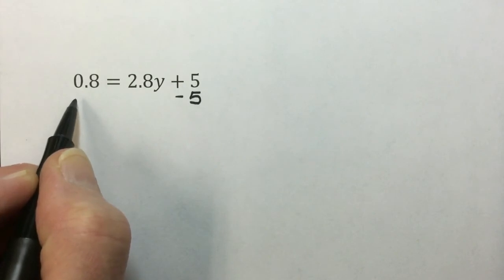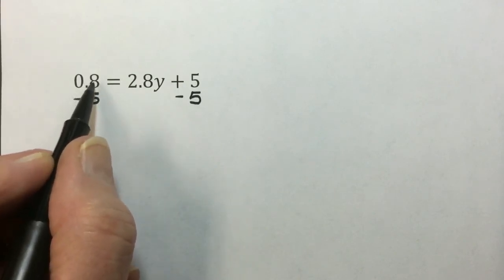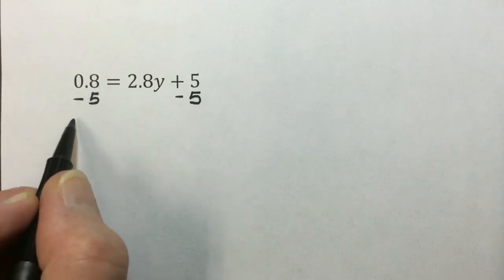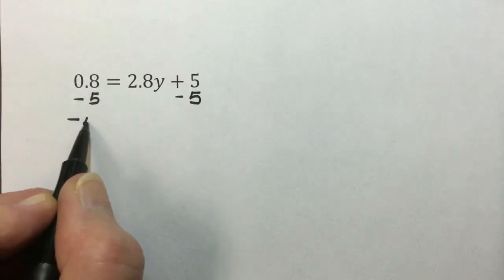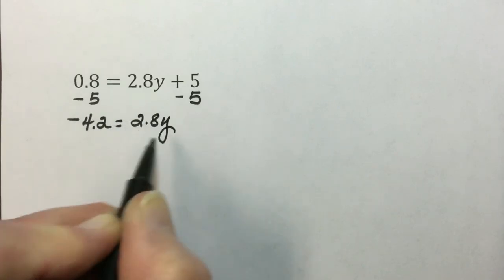To counter an addition of 5, we will subtract a 5. 0.8 or 8 tenths minus 5 leaves us with a negative 4.2 is equal to 2.8y. The 5 is canceling out.